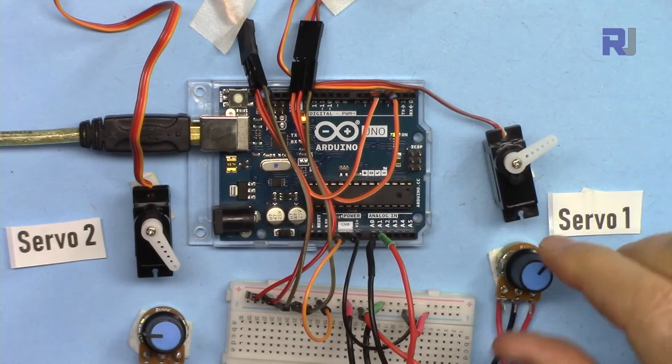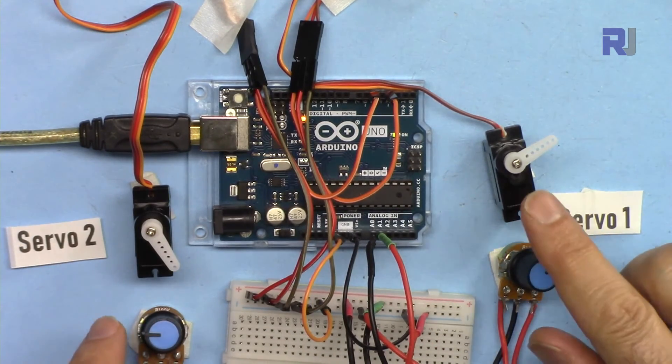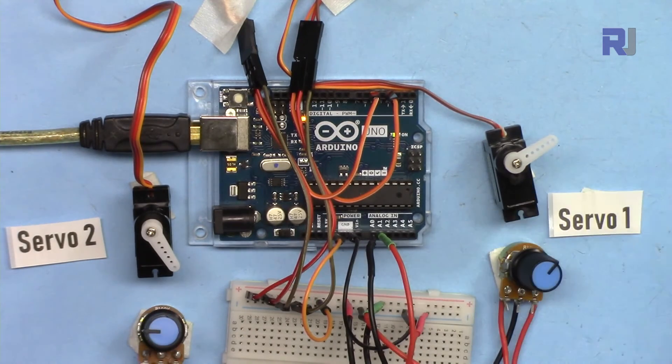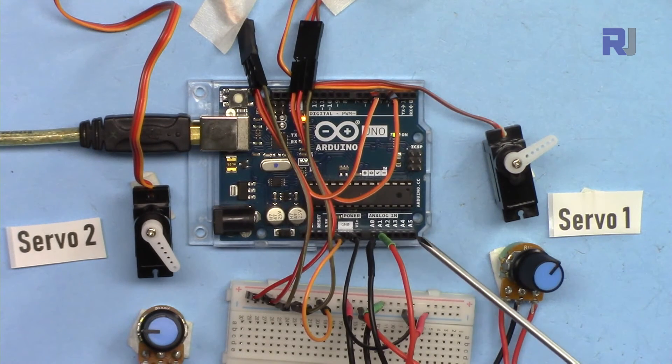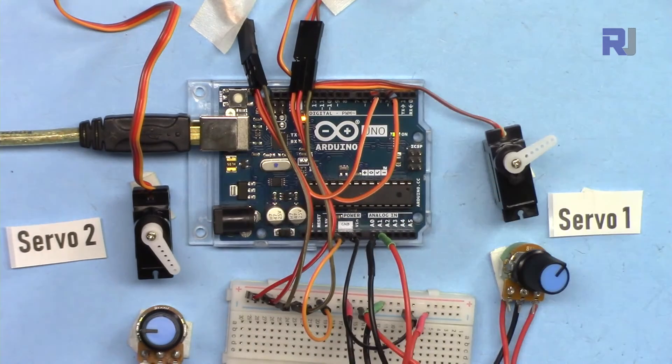It's now responding perfectly. For servo number three or four or five, just add more potentiometers and your servos. You can connect up to six servos here because we have six inputs, six PWM enabled pins.